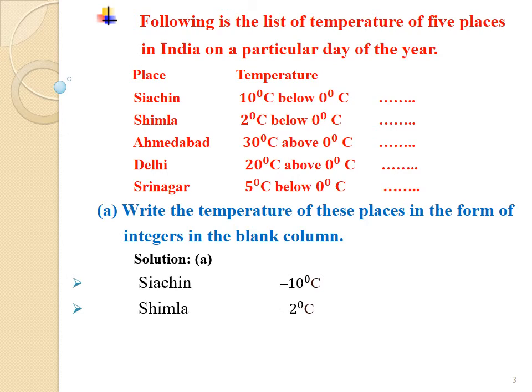The temperature of Ahmedabad is 30 degrees Celsius above 0 degrees Celsius, so the answer is plus 30 degrees Celsius. We place a plus sign before 30 because the word 'above' is given. The temperature of Delhi is plus 20 degrees Celsius, and the temperature of Srinagar is minus 5 degrees Celsius.